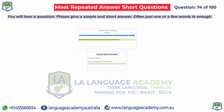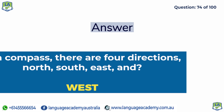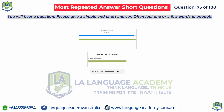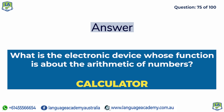In a compass, there are four directions: North, South, East, and West. What is the electronic device whose function is about the arithmetic of numbers? Calculator.